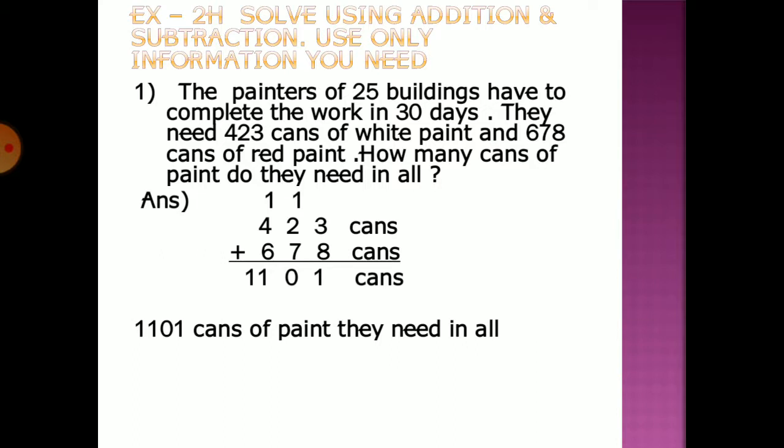How many cans of paint do they need in all? We need to add 423 cans plus 678 cans. When we add them, the answer will be 1101 cans. So 1101 cans of paint they need in all.